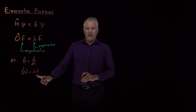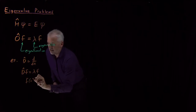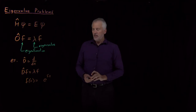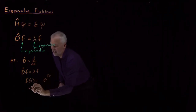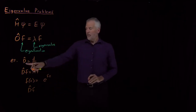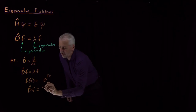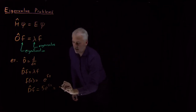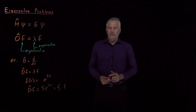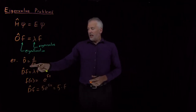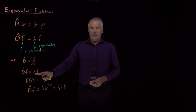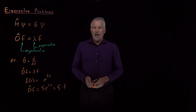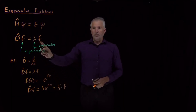Hopefully you've told me e to the x — and in fact not just e to the x, let's say e to anything, like e to the 5x. If f(x) = e^(5x), then the derivative of that function — the D operator acting on the function — gives 5e^(5x), which is a constant 5 times the original function. So we've found a solution: e^(5x) is an eigenfunction of this operator, and the eigenvalue is 5.